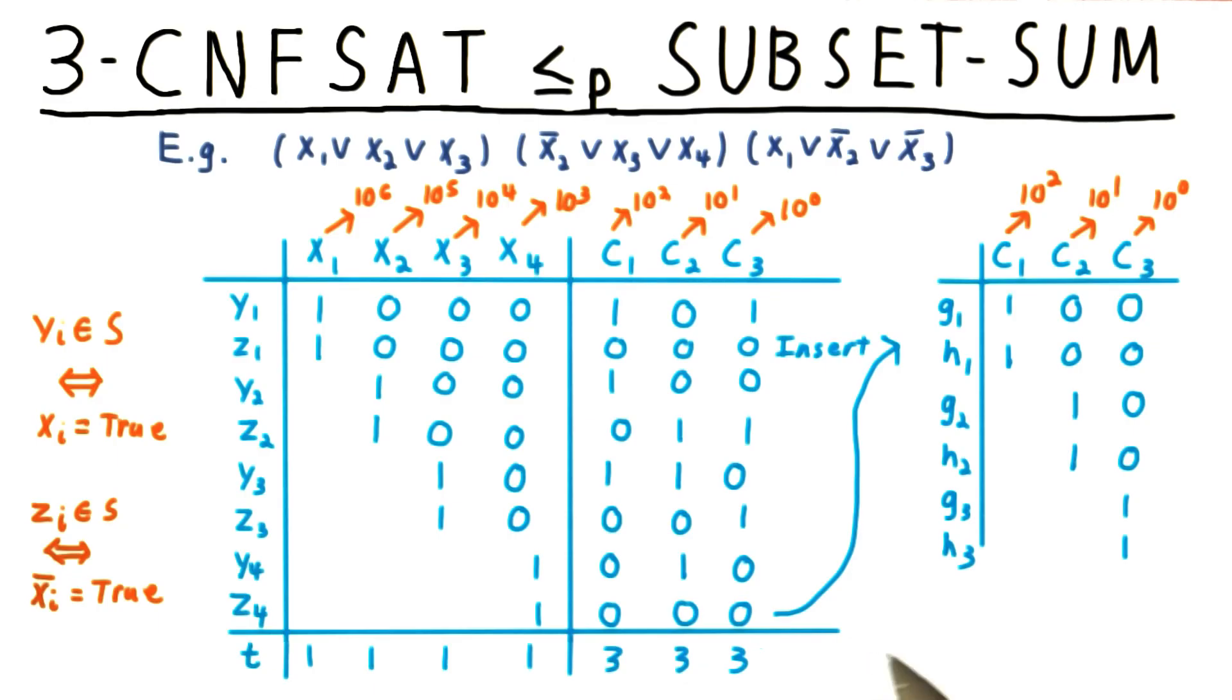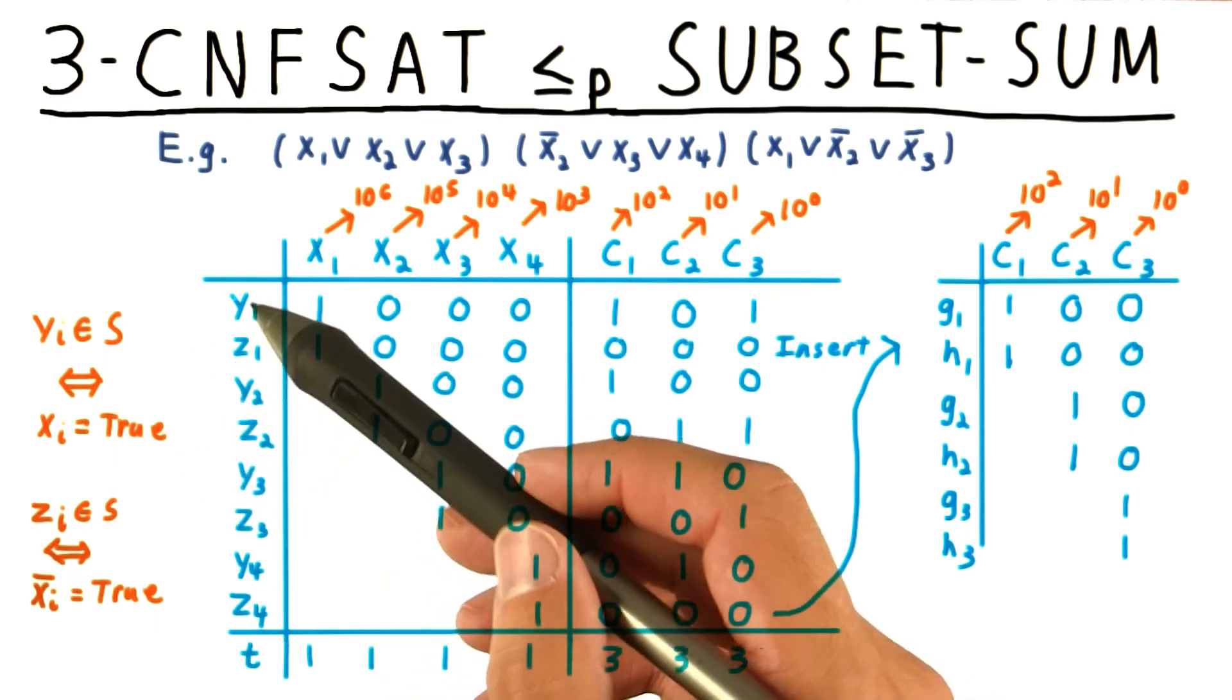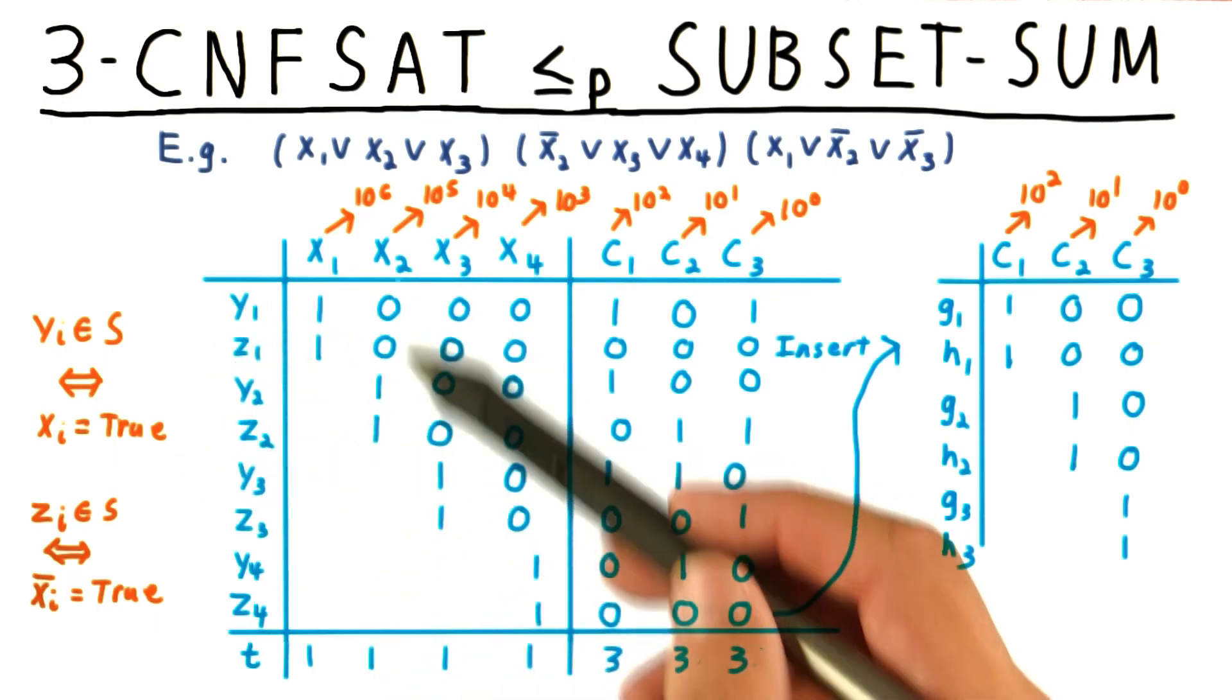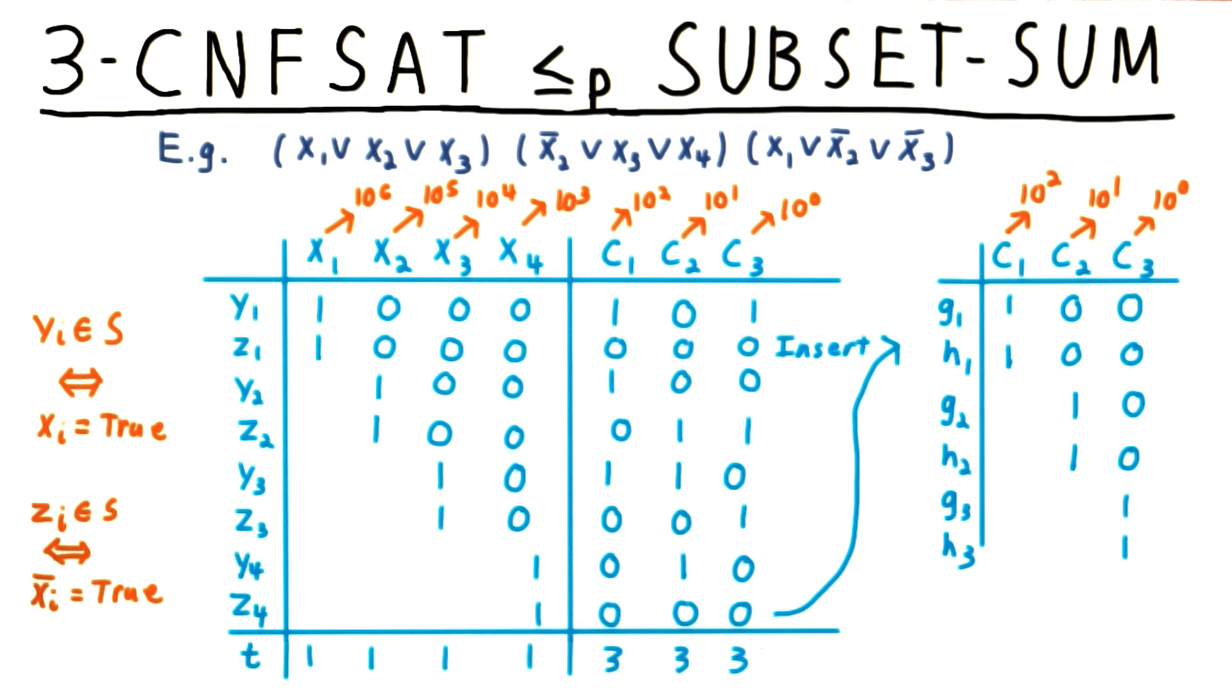So there's the construction. For each variable, include one of the two variables, y or z, which will correspond to the truth setting. And for each clause, include g and h, so as to boost up this total in the clause column to three, where needed.